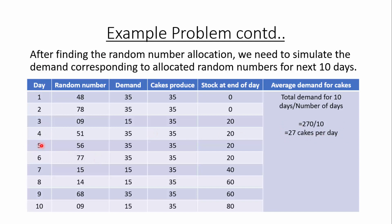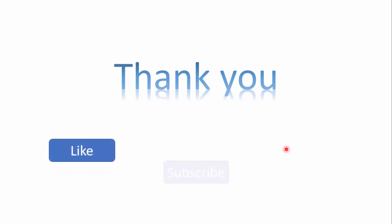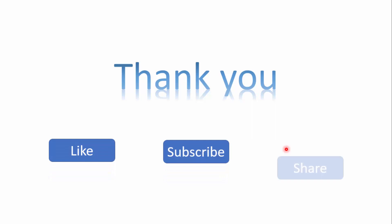So we have simulated the model, found the stock at the end of 10 days to be 80 cakes, and found the average demand for cakes to be 27 per day. This concludes our problem. If you like this lecture, please share it. Have a nice day, thank you.